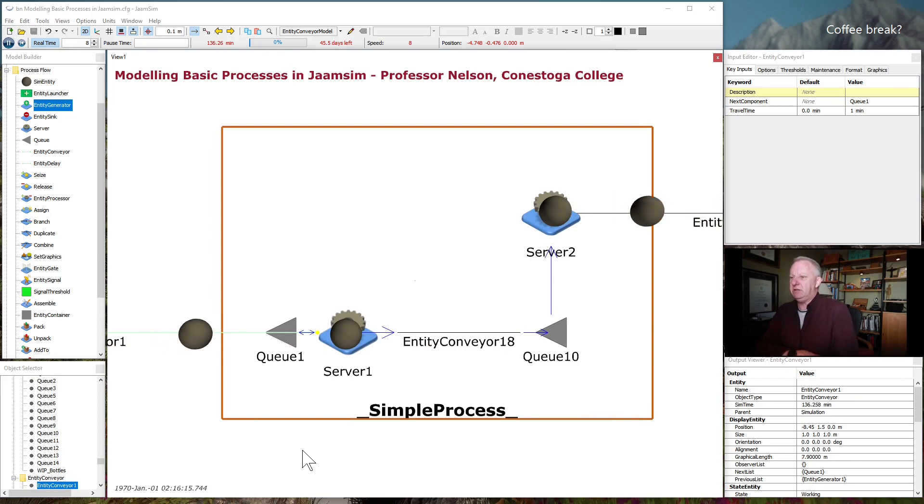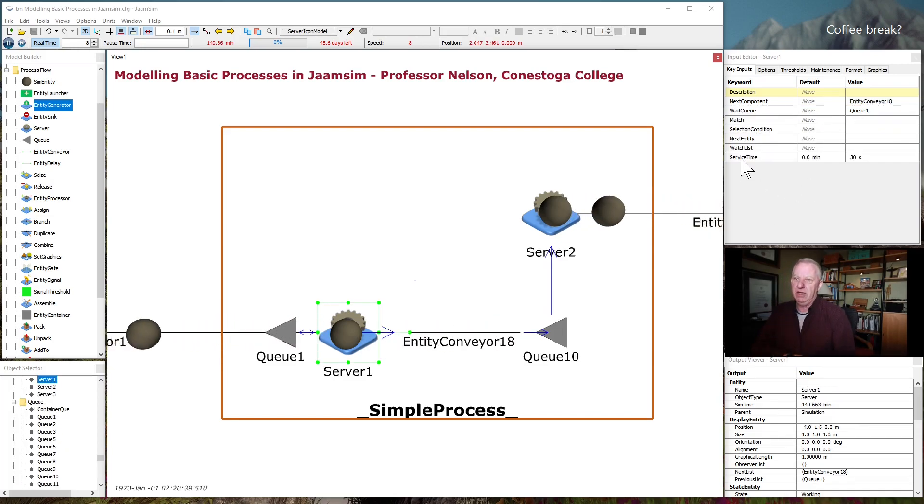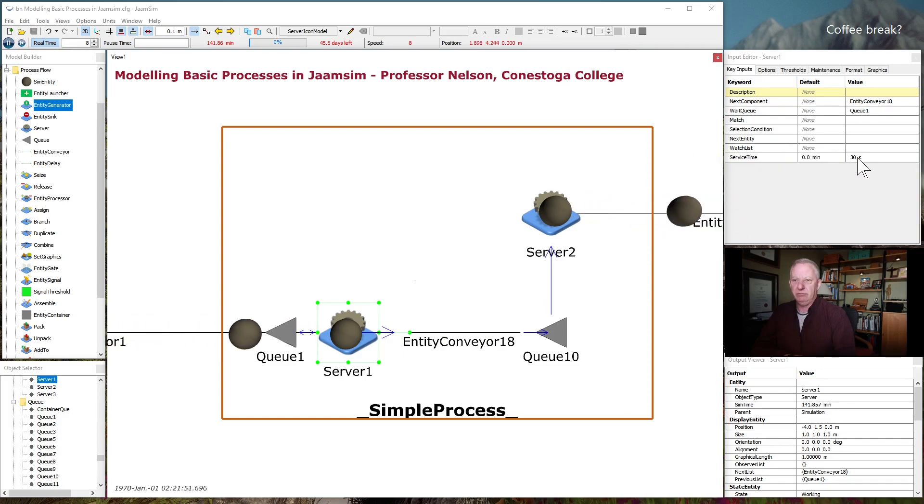So the simplest process I think to model is a combination of a queue and a server. Think of a server as anything that does work or acts on an entity that arrives. So it could be a milling machine, it could be a barista who works on a customer order, it could be a barber who works on a customer. It can be virtually anything you want. And for the server, the main thing that's defined is the service time. So this is the time required to process the entity. I've defined it as 30 seconds. You can define it in any valid unit of measurement.